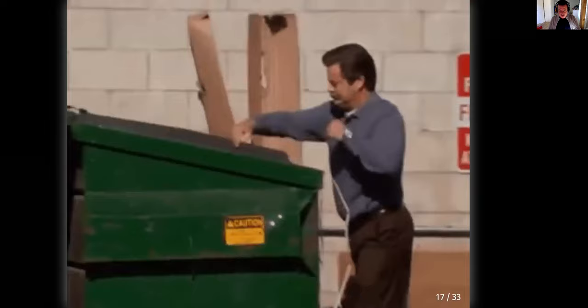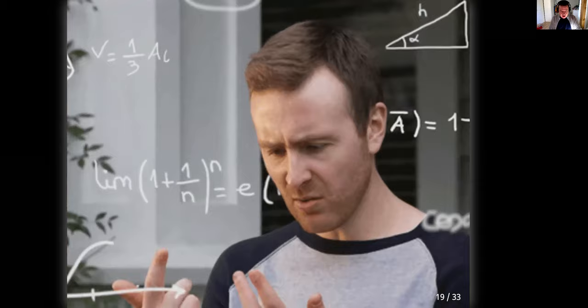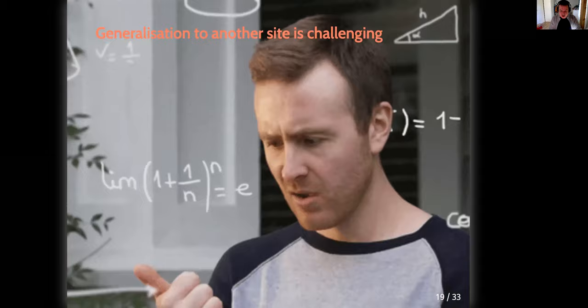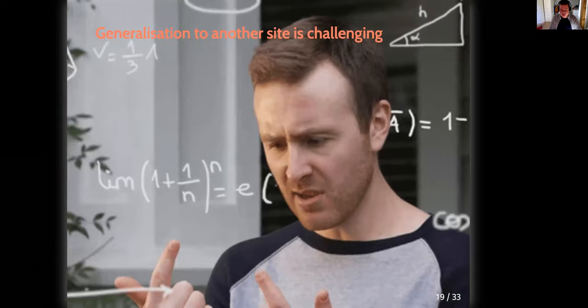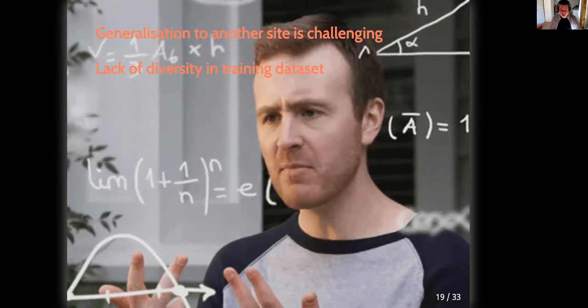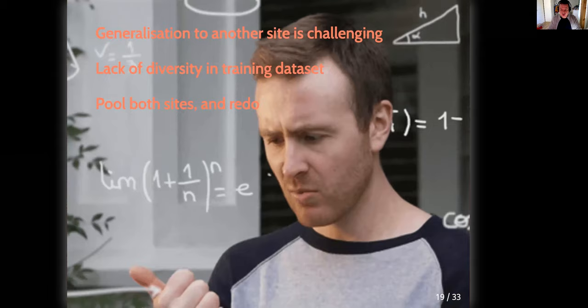It took me some time to get over the frustration, and then I asked myself why the results were so bad. We came up with several reasons. We know, for example, that generalizing from one site to another is tricky with deep learning — traps might be different, as well as environmental conditions, the exposition, etc. Another reason might be that our training dataset was simply too small. So the next thing I'm going to do is to pool both datasets together from the two counties and train my model again.